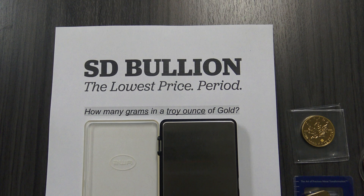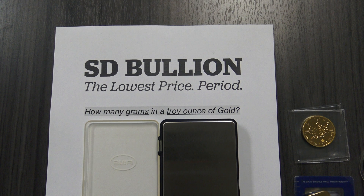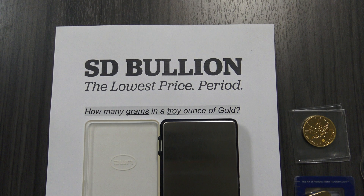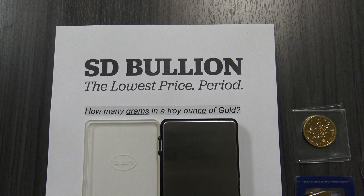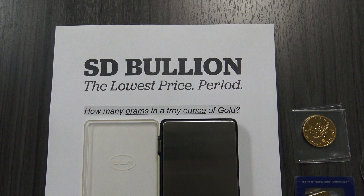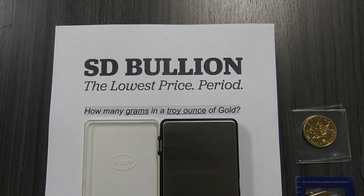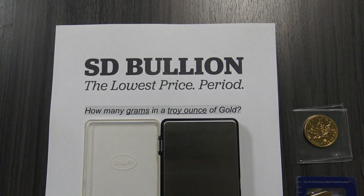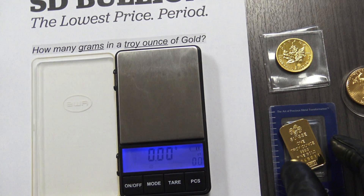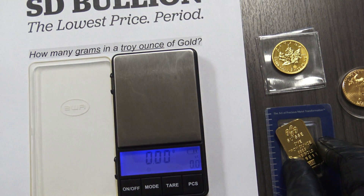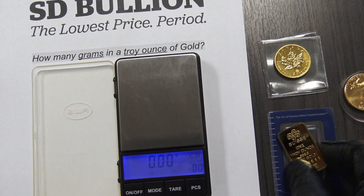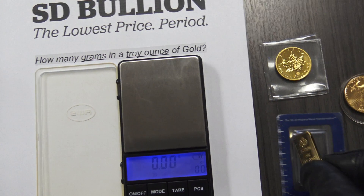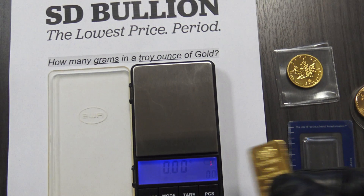For this real-world example, we will use a $12, two decimal point digital scale to weigh some common 24-karat, one troy ounce gold bullion products. We will also give you a bonus piece of information regarding common 22-karat gold bullion coins' weights and measures.